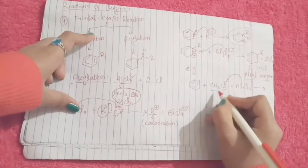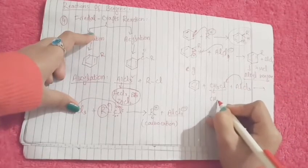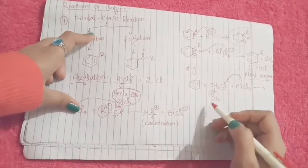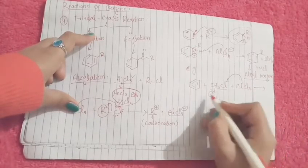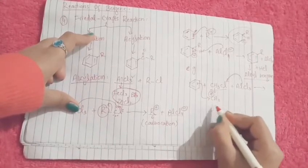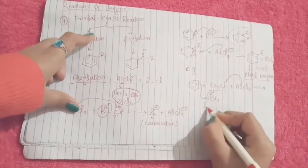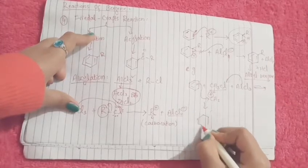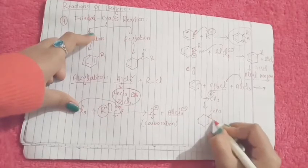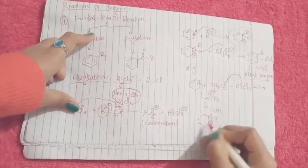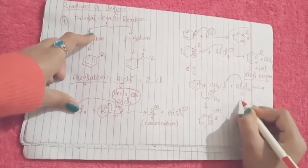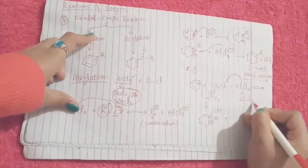What will happen? Aluminum chloride will take up this chlorine, and we will get a carbocation. This will generate a carbocation. Then benzene will attack on this carbocation, and the reaction will proceed like this. We got a positive charge here, and it became AlCl4 negative here.